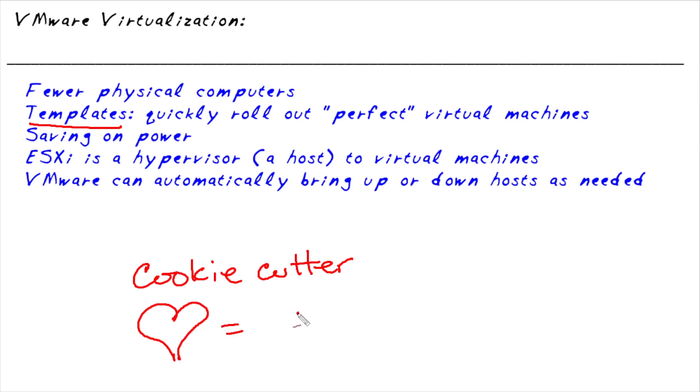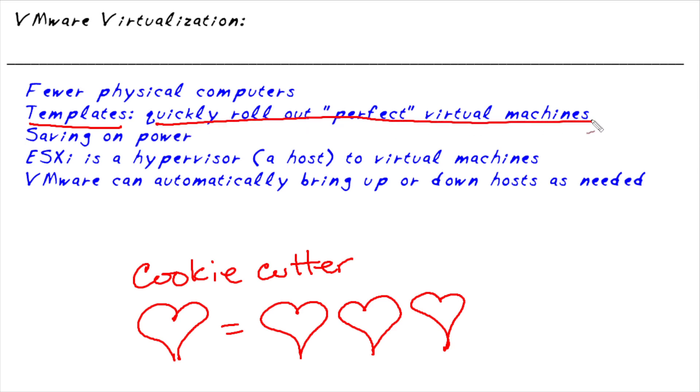So what then is a template? In a virtualized world, instead of taking an install CD and installing Windows or Linux every single time, we can create an almost perfect image of what we want our virtual machine to look like, and then create a template out of that. It's like cookie cutters — if you need another five or ten servers, you simply launch five or ten more from the template, and it rolls them out, including changing things like security identifiers and MAC addresses. This makes it very automated. It certainly makes it a lot faster to roll out: instead of taking an hour or two to roll out an operating system, we could do it in like five or ten minutes.